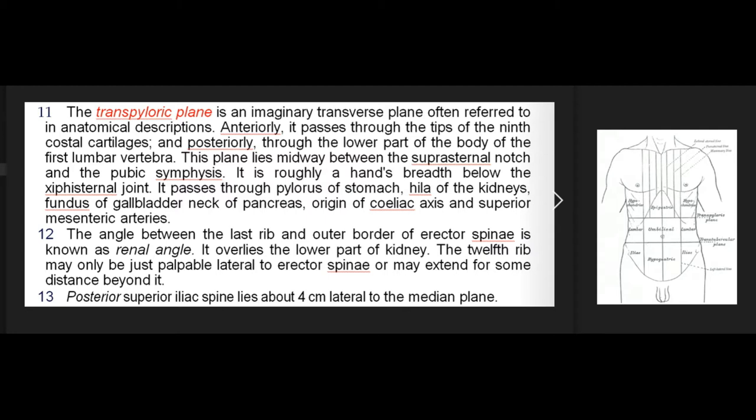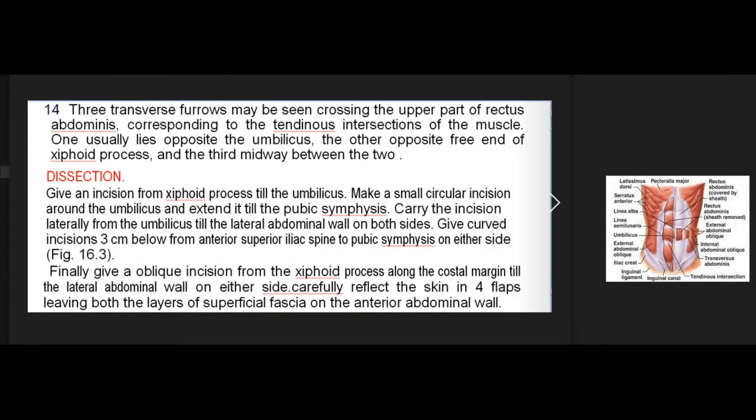The angle between the last rib and outer border of erector spinae is known as the renal angle, and it overlays the lower part of the kidney. The 12th rib may only be just palpable lateral to erector spinae or may extend for some distance beyond it. The posterior superior iliac spine lies about 4 cm lateral to the median plane. Three transverse furrows may be seen crossing the upper part of rectus abdominis, corresponding to the tendinous intersections of the muscle: one usually lies opposite the umbilicus, another opposite the free end of the xiphoid process, and the third midway between the two.